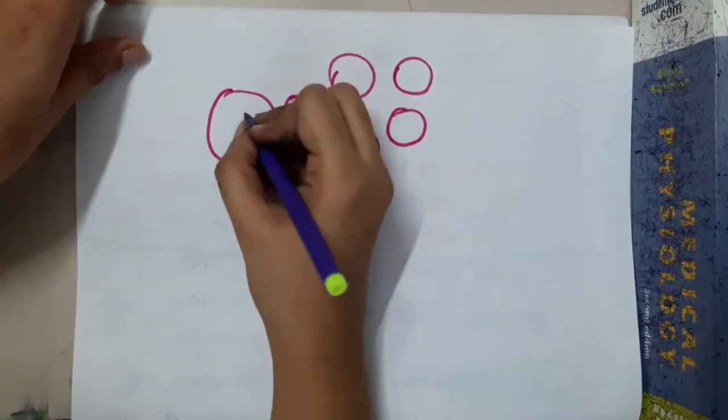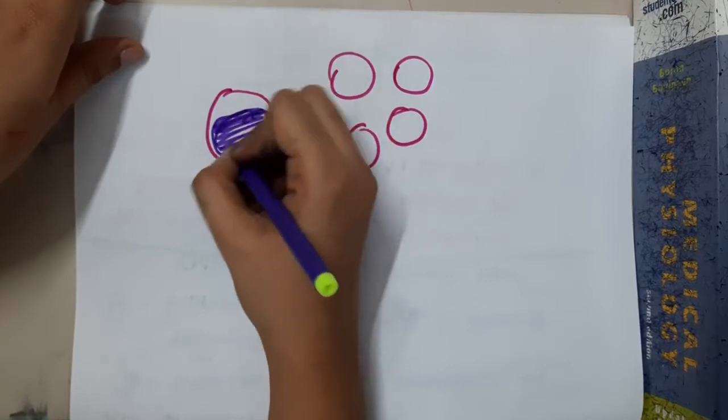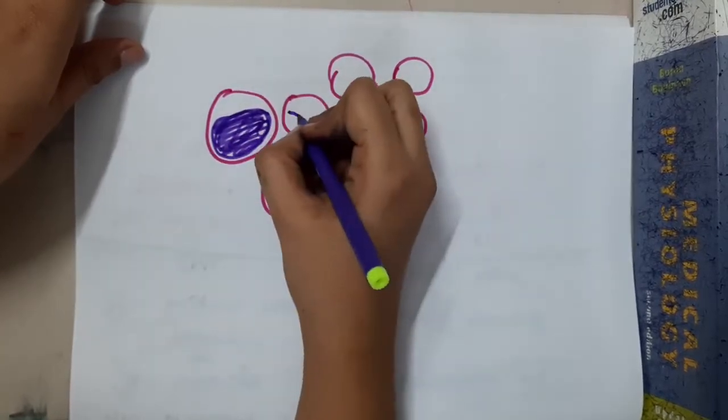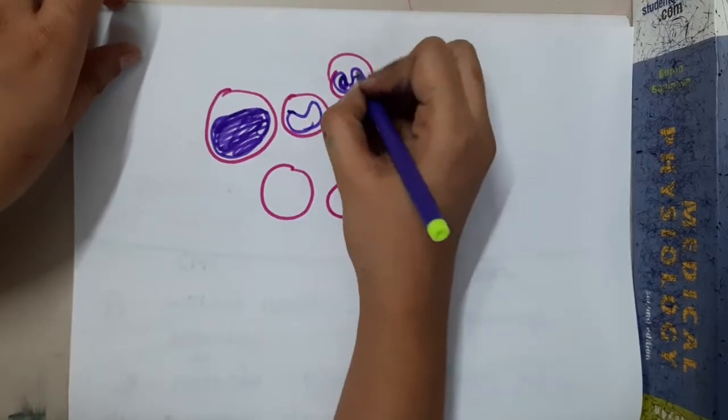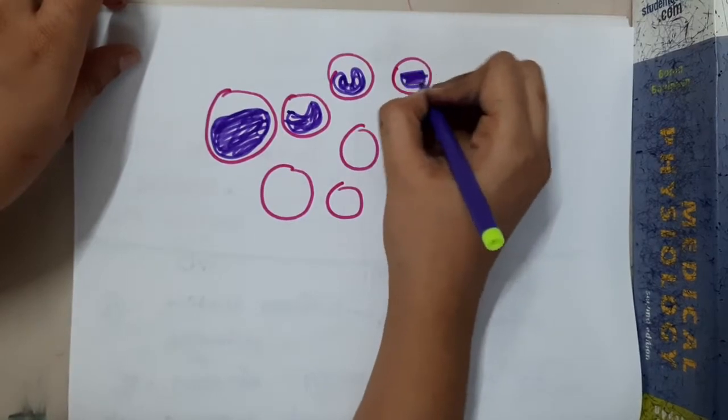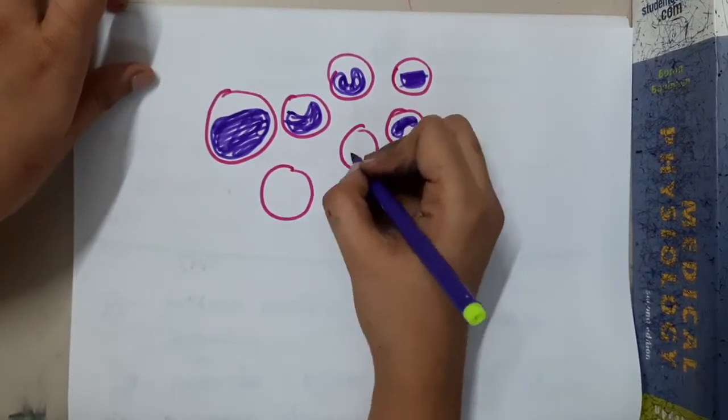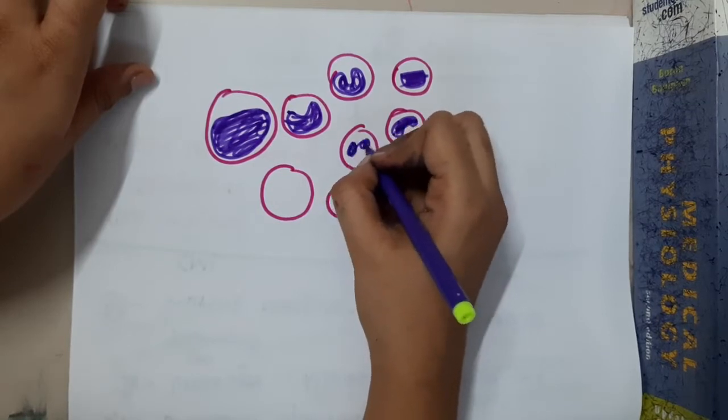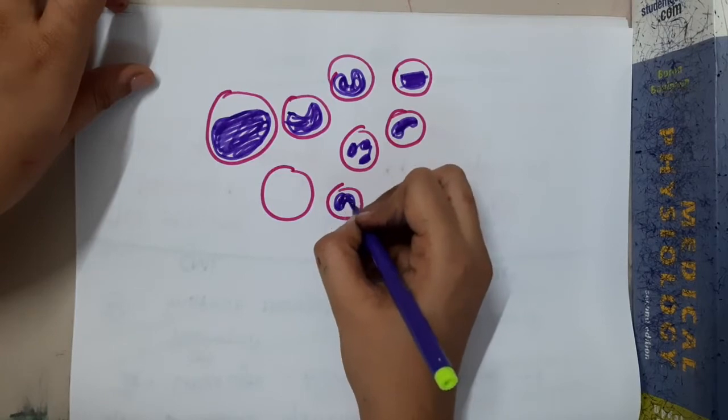The lymphocytes - you will see a pro-myelocytic lymphoblast, meta-myelocytic lymphoblast, you will see presence of a band form, you will see lymphoblasts of different sizes, there will be a neutrophil also.